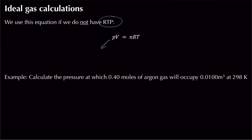When working with the equation, pressure must be in pascals and volume in metres cubed — unlike every other chemistry equation where volume is in decimetres cubed. Moles is the amount of substance. The gas constant has units of joules per Kelvin per mole, and temperature must be in Kelvin.